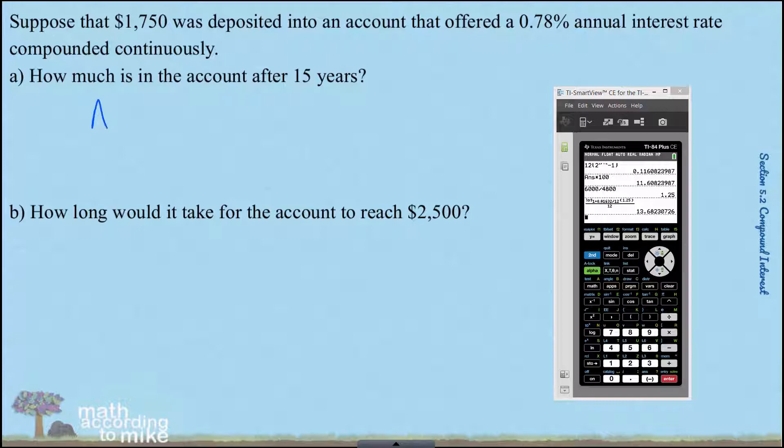Alright, we use the formula A equals P E to the R T. Letters mean the exact same thing, except remember E is not a variable. It is the number E, the exponential number 2.71828 approximately.